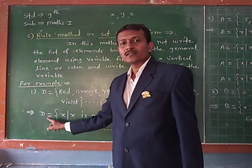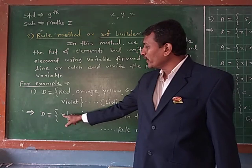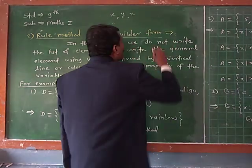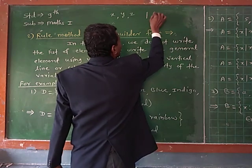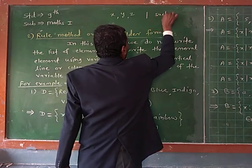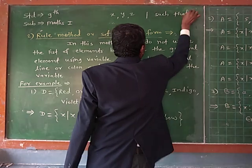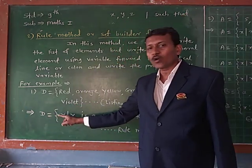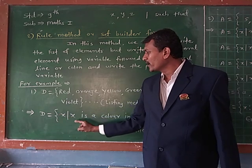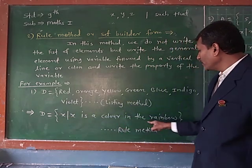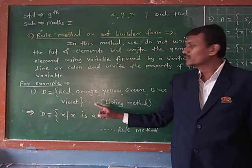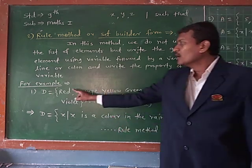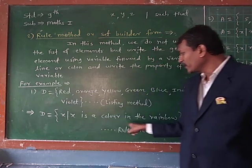Set D is the set of all x — the vertical line means 'such that'. Therefore, D is the set of all x such that x is the color in the rainbow. Don't write the color in this method; write only the variable. x is the variable.